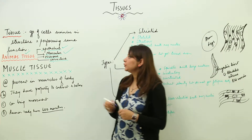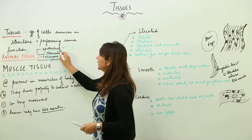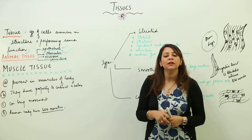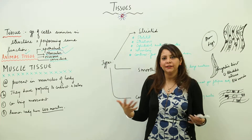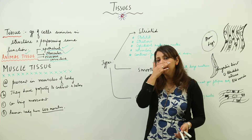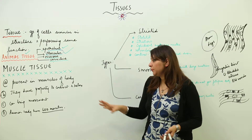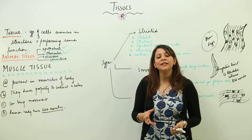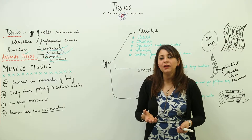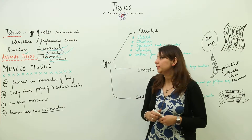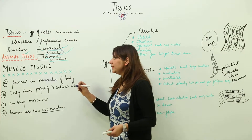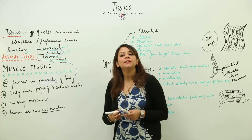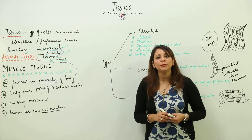Now the second issue we are going to do is the muscular one. As you all know, muscles are very important in a body. Approximately we have 600 muscles in a human body. So if we talk about muscle tissue, it will obviously be formed of muscle cells. These are the characteristics of muscle tissue we are going to cover, and this tissue forms the muscles of the body.